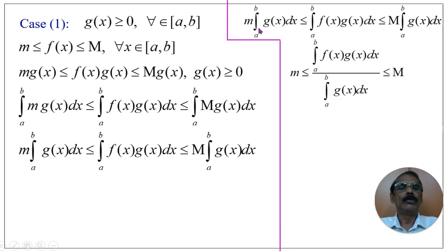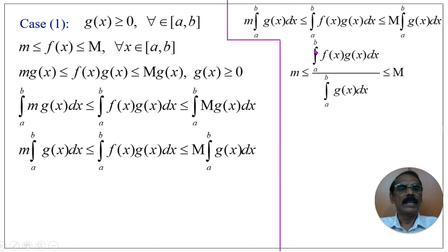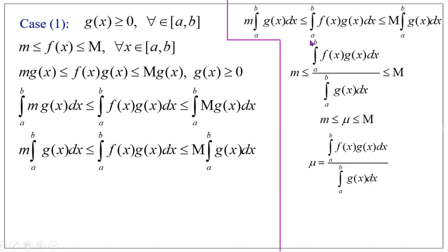Now, dividing throughout by the integral from a to b of g(x) dx — since g(x) is non-negative, the inequality is preserved — we get: m ≤ [∫[a to b] f(x)g(x) dx] / [∫[a to b] g(x) dx] ≤ M. Let us denote the value ∫[a to b] f(x)g(x) dx divided by ∫[a to b] g(x) dx as μ. Then m ≤ μ ≤ M.